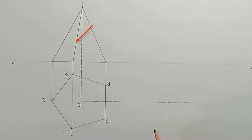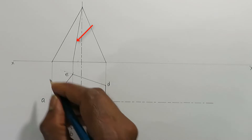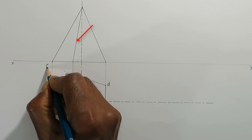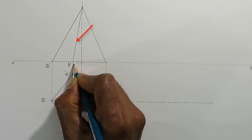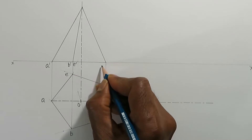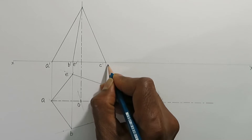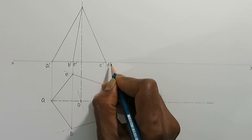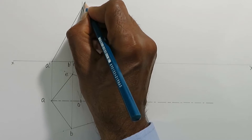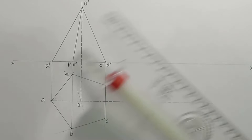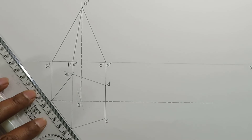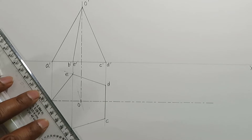This is the front view of the slant edge OB. Label all the vertices as A prime, B prime, and so on. The apex will be labeled as O prime.